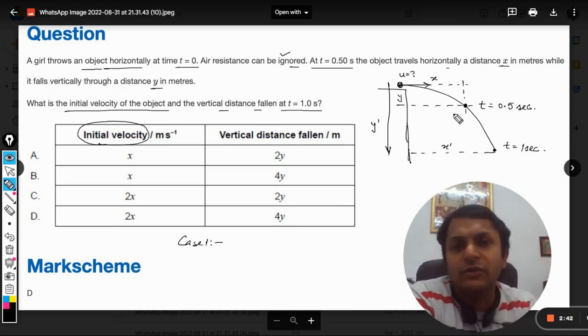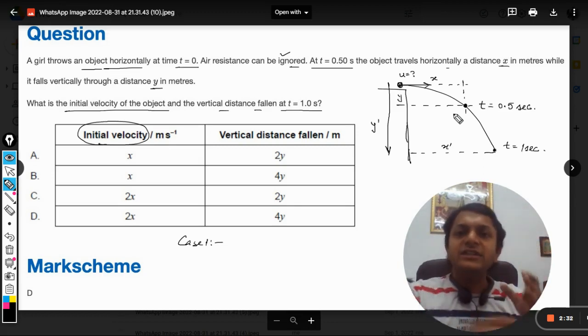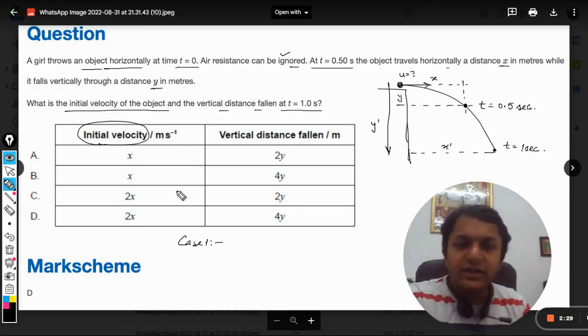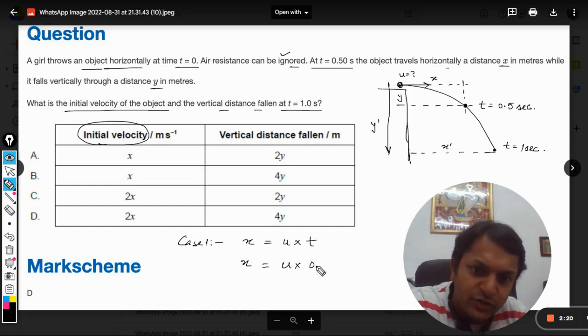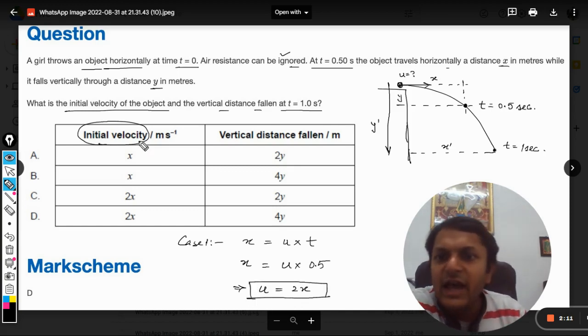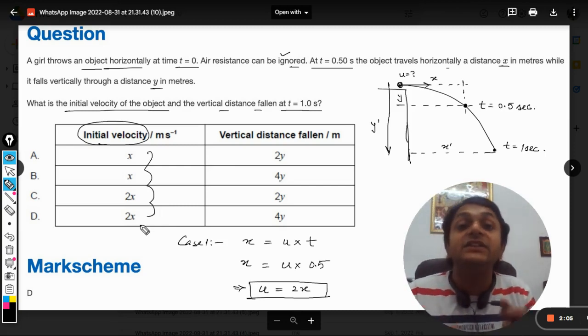Not on the horizontal axis, so it means that horizontally the velocity will be constant. It is traveling for 0.5 seconds at a constant speed and the distance traveled is x. So straightforward, I can create this equation: distance equals speed into time, which is 0.5. From here I can say that initial velocity will be equal to 2x.